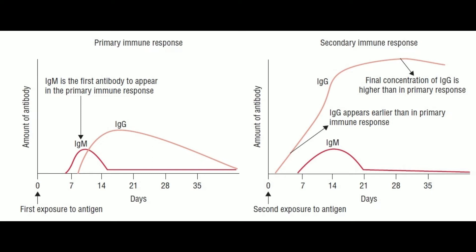Characteristic #2 - Appearance: The primary immune response appears mainly in the lymph nodes and spleen. The secondary immune response appears mainly in the bone marrow, spleen, and lymph nodes. Characteristic #3 - Occurrence: The primary response occurs in response to the primary contact of the antigen. The secondary response occurs in response to the second and subsequent exposure to the same antigen.